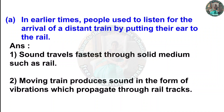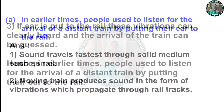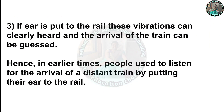Answer: First, sound travels fastest through solid material such as a rail. Second, a moving train produces sound in the form of vibrations which propagate through the rail track. Third, if the ear is put to the rail, these vibrations can be clearly heard and the arrival of the train can be guessed. Hence, in earlier times people used to listen for the arrival of a distant train by putting their ear to the rail.